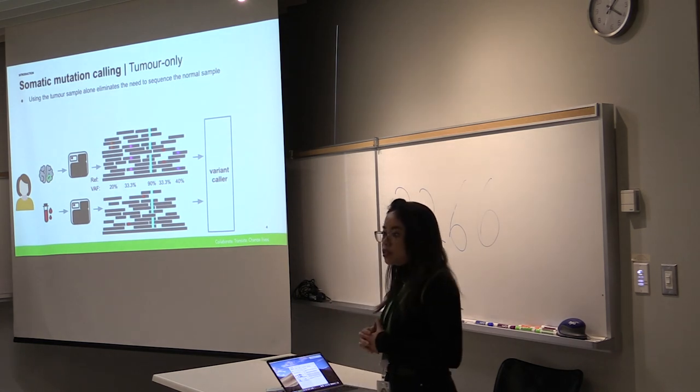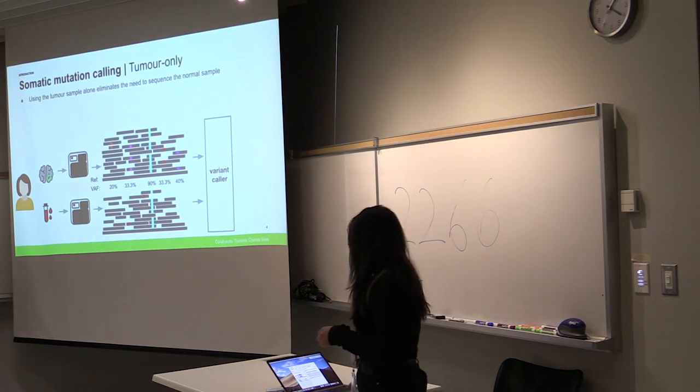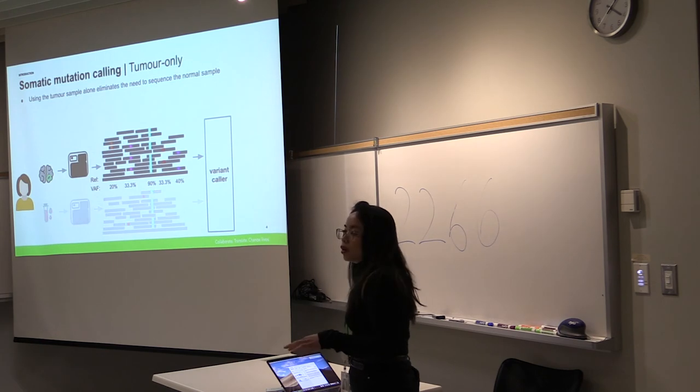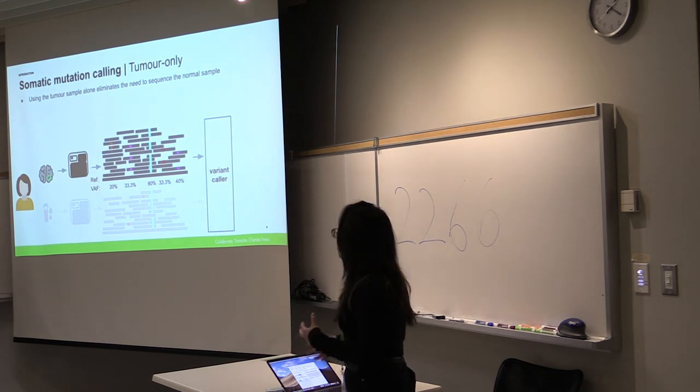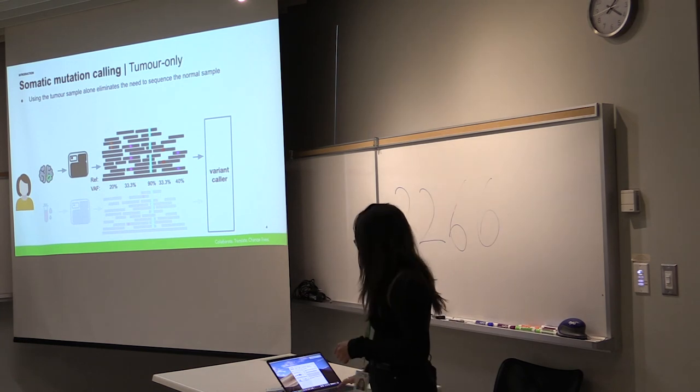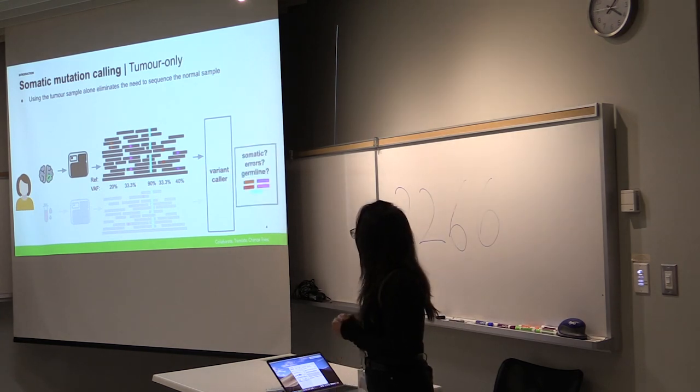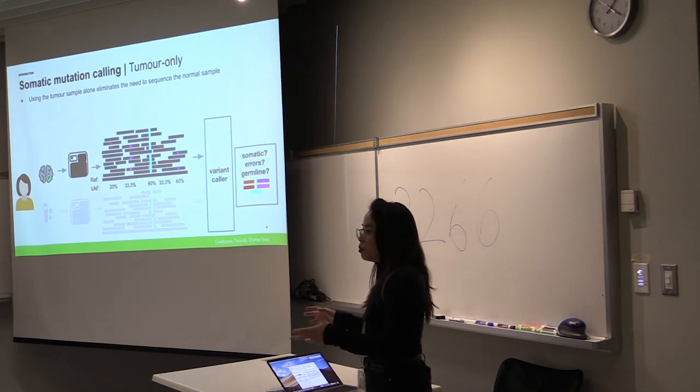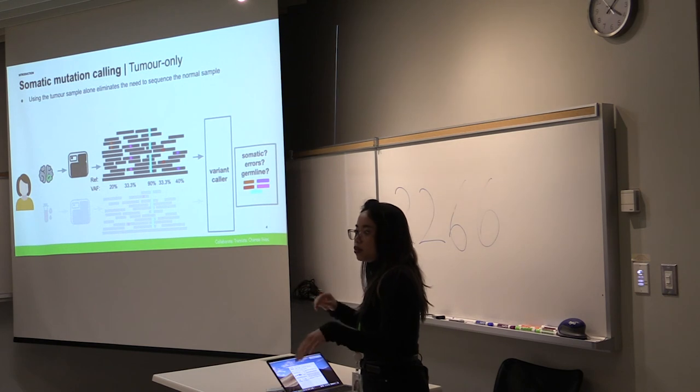Another approach is using just the tumor alone. We no longer have access to the normal sample and the motivation behind that is then we don't have to sequence the normal. This becomes even more challenging because we don't have that normal sample to distinguish germline mutations and still have that second problem of segregating between somatic and errors.